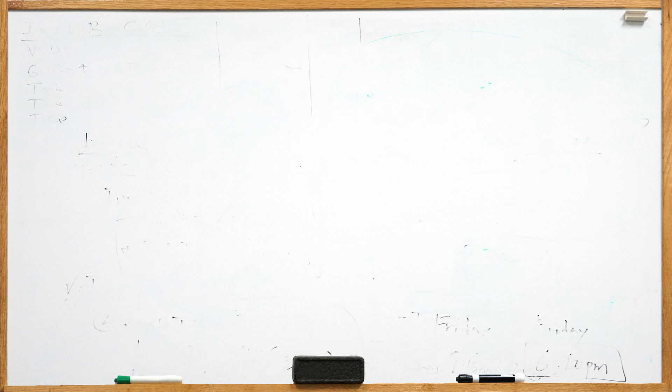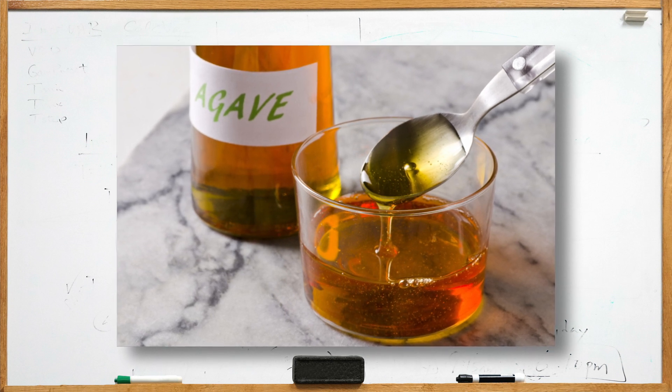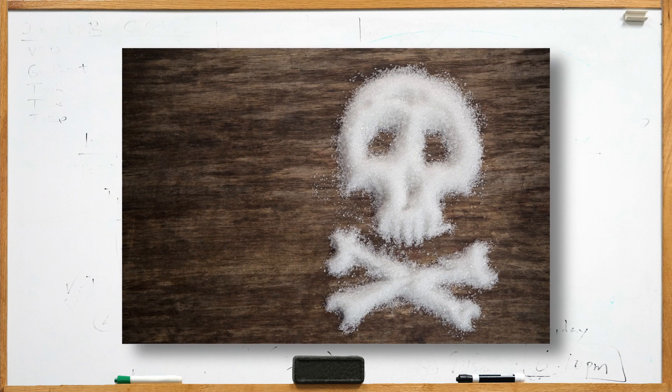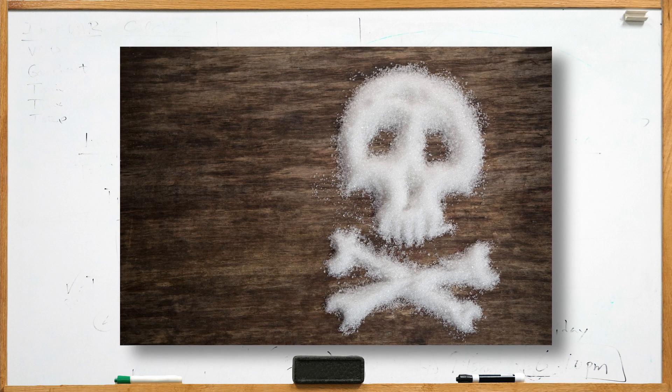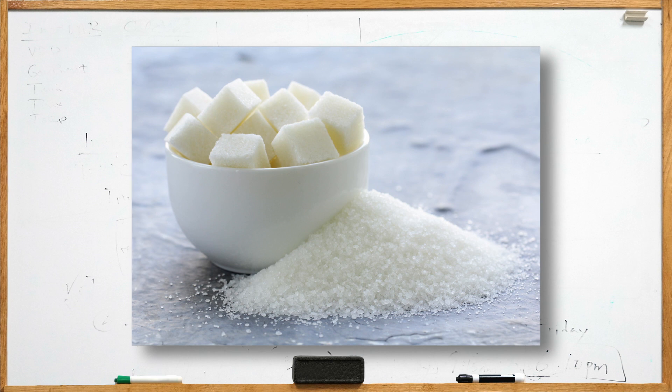White sugar. First off, stevia and agave syrup are way healthier options than regular sugar. Refined sugar is not naturally white, rather bone char, which is often labeled as natural carbon, is used to give sugar the white color.